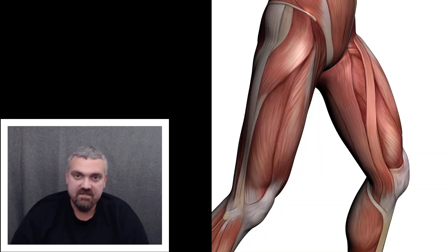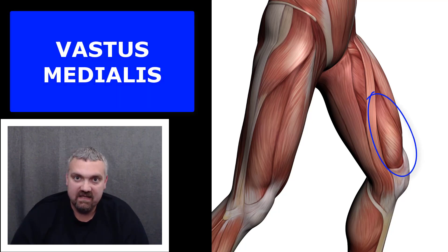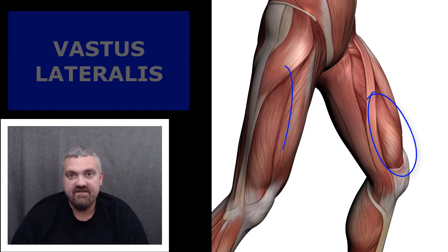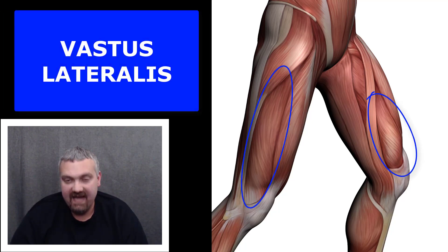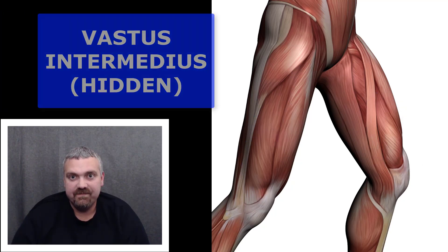Vastus means great. The vastus muscles make up three-fourths of your quadriceps, your thigh muscles. We have vastus medialis on the medial surface, vastus lateralis on the lateral surface, and vastus intermedius right in between.